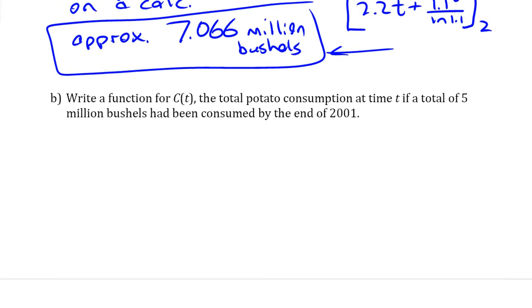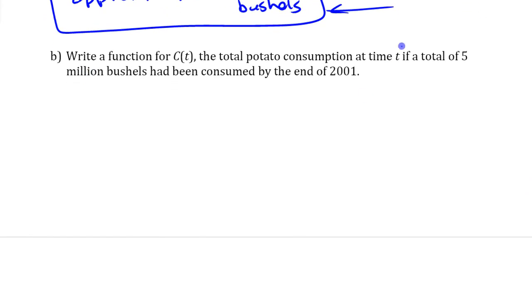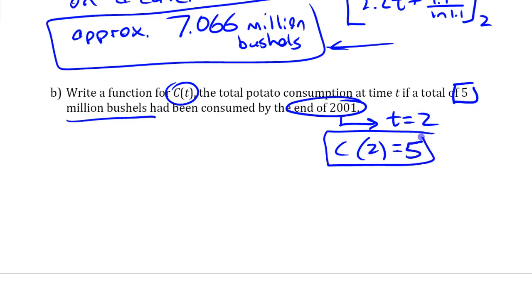The second thing we're going to do is look at writing a function for the consumption at time t, not a specific value at a certain time, but a function we can use at any time. To do that, we need a specific value at a certain point in time. You're given that at the end of 2001, or in other words the beginning of 2002, time equals 2, there is a total of 5 million bushels consumed. So if we're using this notation, c(2) = 5. That's the condition we're going to use.